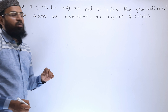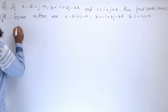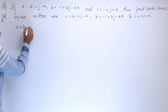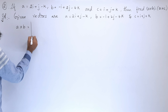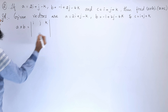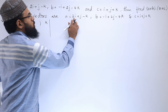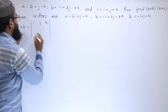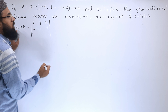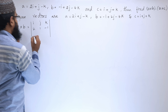Let us find out a × b first. Setting up the determinant with i, j, k. a is 2, 1, -1 and b is -1, 2, -4.